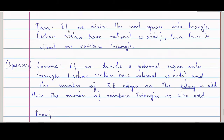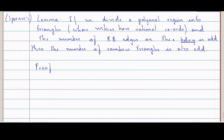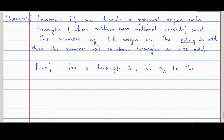Using this lemma, we will prove the theorem. What we will do is: if I have a triangle delta, we will let n(delta) be the number of red-blue edges of this triangle. A triangle can have any three color combinations — it can be red-blue-blue, or red-blue-green. Red-blue-green is a rainbow triangle.